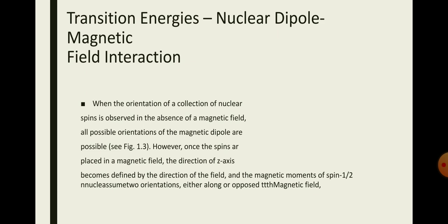Transition energies in nuclear dipole-magnetic field interaction: when the orientation of a collection of nuclear spins is observed in the absence of a magnetic field, all possible orientations of the magnetic dipole are possible. Once a spin is placed in a magnetic field, the direction of the z-axis becomes defined.